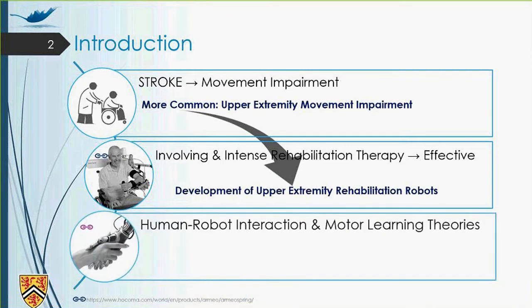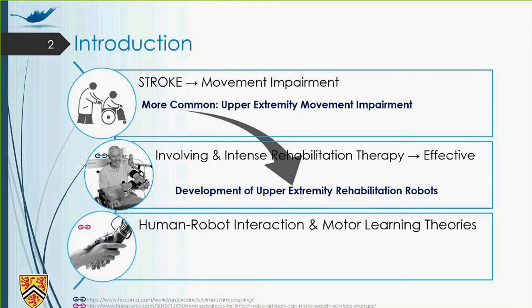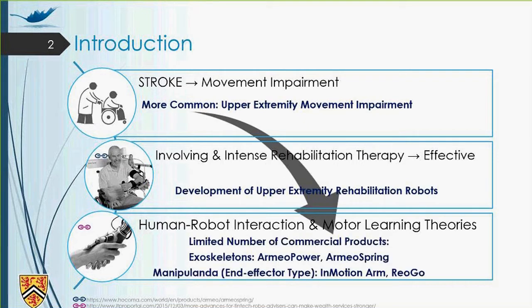But in dealing with rehabilitation robots, there are some limiting factors like human-robot interaction or unknown motor learning theories. These limiting factors limit the number of available commercial products. In exoskeleton type rehabilitation robots, I can mention RMO power and RMO spring as available commercial products. And in manipulanda type or end-effector type rehabilitation robots, I can mention Emotion Arm and RioGo as the available commercial products.